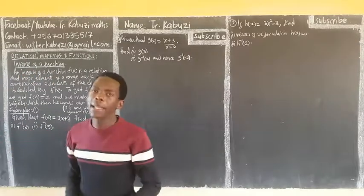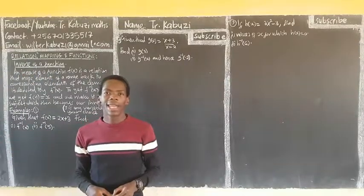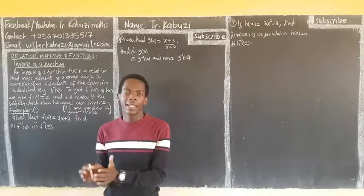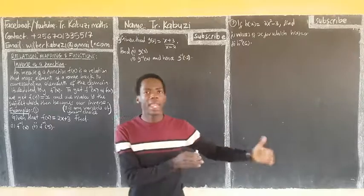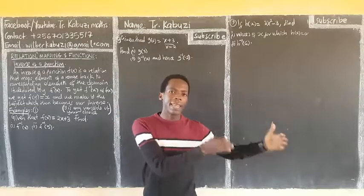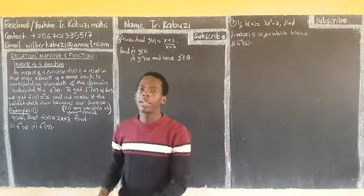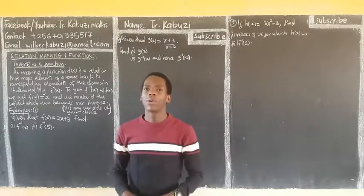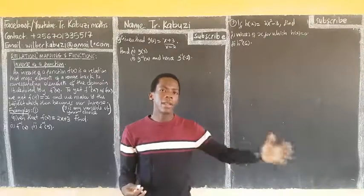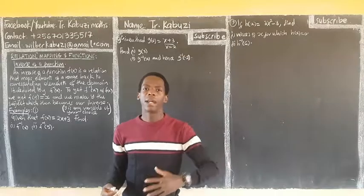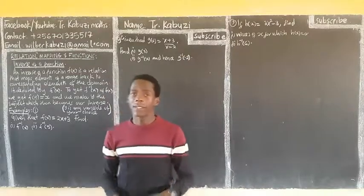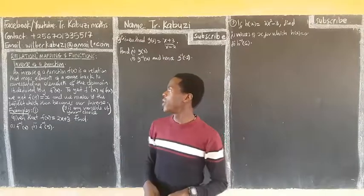Now members, we are going to see how we get the inverse of a function. We have seen a function can get elements on the domain to the elements of the range. Now we are going to see which function gets the elements on the range back to the elements of the domain. That's what we call an inverse — you are inversing the process. From taking them to the range, then you are bringing them back. What brings them back to the domain is what we call an inverse of the function.